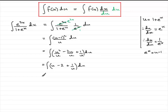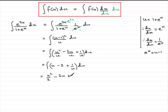Each of these three terms we can now integrate. The integral of u is u squared over 2 — add 1 to the power, divide by the new power. The integral of the constant minus 2 is minus 2u. And the integral of 1 over u is the natural log of u. Too often people write u to the minus 1 and then try to add 1 to the power and divide by the new power — it just doesn't work because you end up dividing by zero. So the integral of 1 over u is the natural log of u — and don't forget the mod signs.